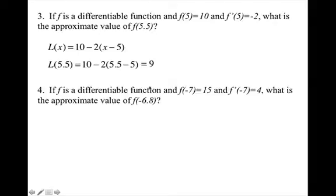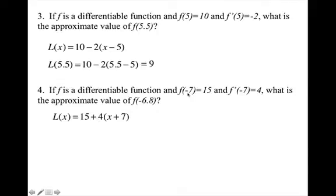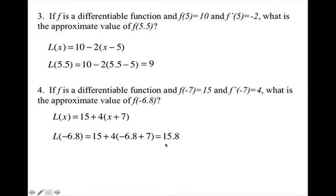Alright, I want you to see if you can do this one all by yourself. Alright, let's see how you did. You should have written your equation of your tangent line at the point (negative 7, 15). Your slope of your tangent line is 4. Now plugging in negative 6.8 and simplifying gives 15.8.